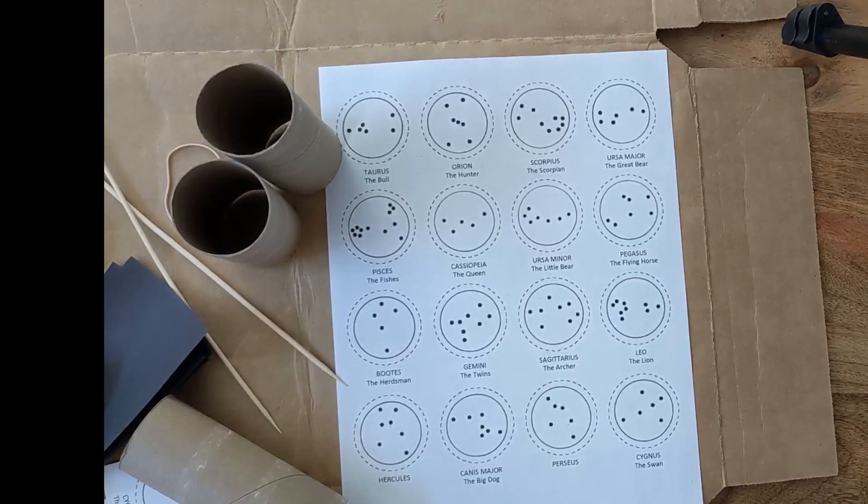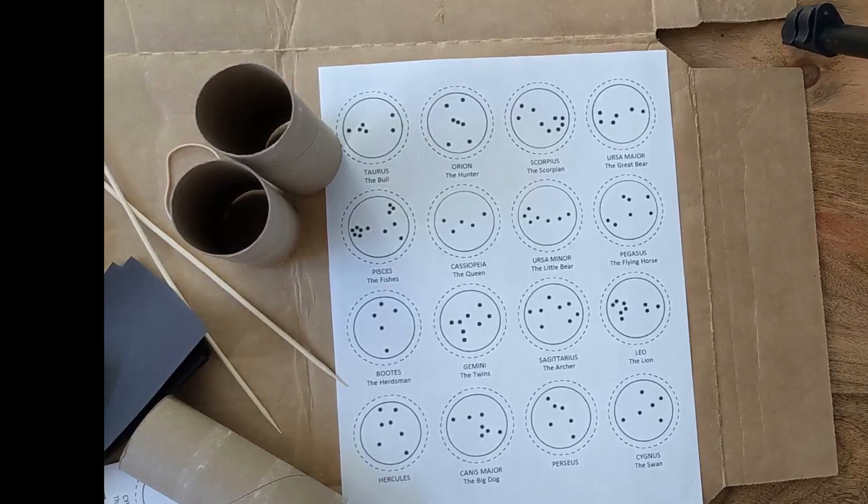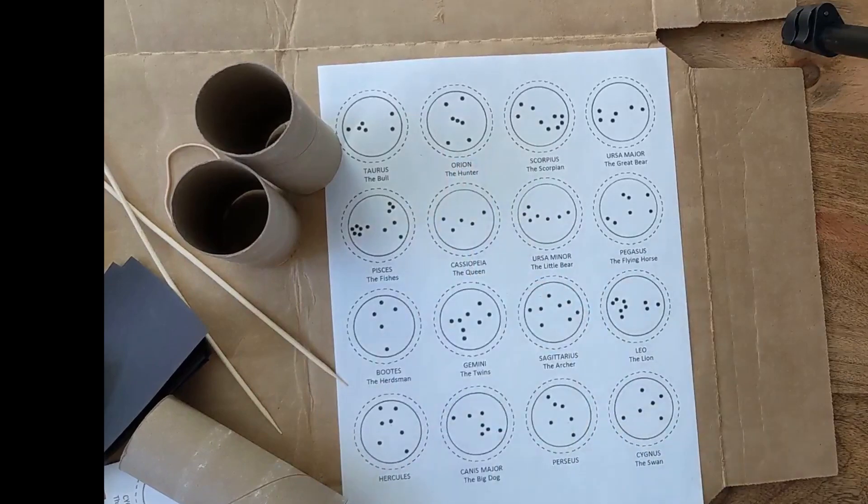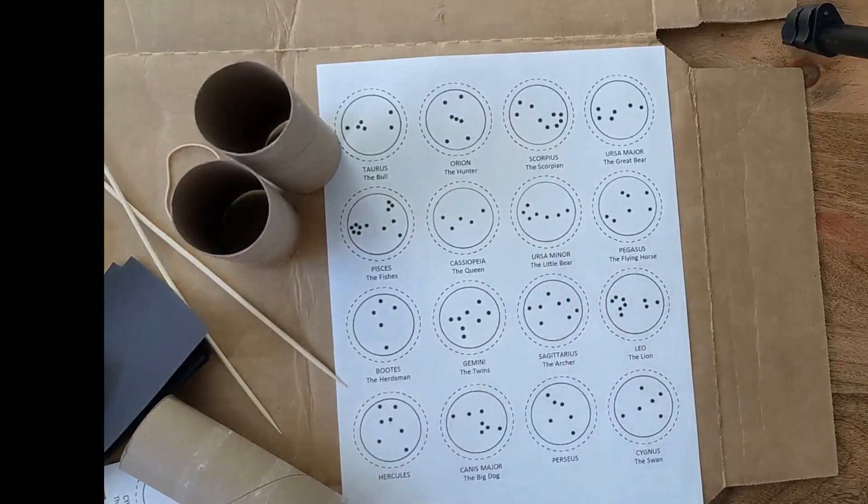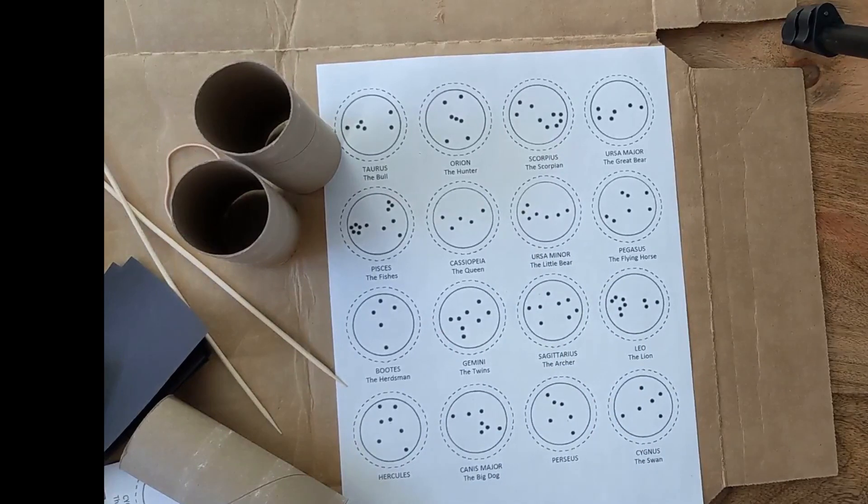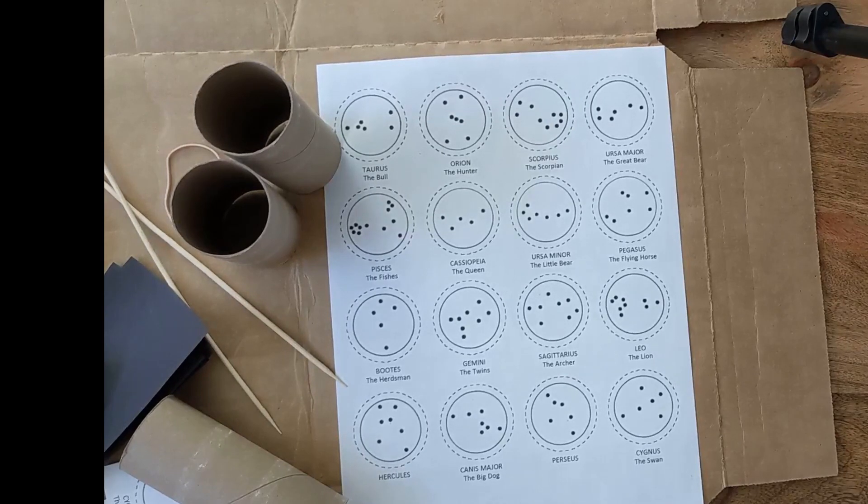We are going to make our constellation scopes. So if you've ever looked out at the night sky you can see patterns of stars that are sometimes identified as constellations. There are numerous constellations in the night sky that represent a lot of Greek and Roman mythology. Some of these include Orion, Cassiopeia, and Ursa Minor. While there are many constellations in the sky, some constellations are only visible during certain times of the year. Currently there are 88 modern constellations in the sky established by the International Astronomical Union. So let's get started.